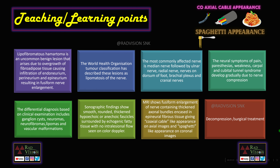Teaching and learning points: Lipofibromata hamartoma is an uncommon benign lesion that arises due to overgrowth of fibro-fatty tissue causing infiltration of the endoneurium, perineurium, and epineurium, resulting in fusiform neural enlargement. The WHO has described these lesions as lipomas of the nerve. The most common affected nerve is the median nerve, followed by ulnar, radial, nerves of dorsum of the foot, brachial plexus, and cranial nerves. Symptoms can include pain, paresthesias, weakness, carpal tunnel syndrome, or cubital tunnel syndrome depending upon the nerve compressed. Differential diagnosis on clinical examination includes ganglion cysts, neuromas, neurofibromas, lipomas, and vascular malformations.